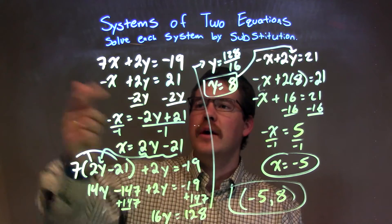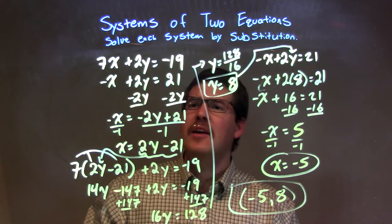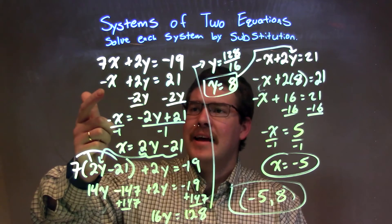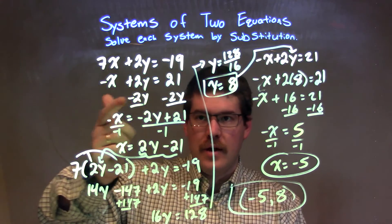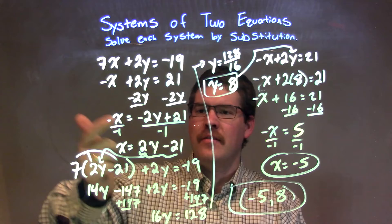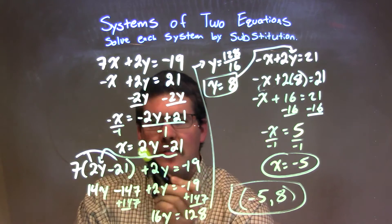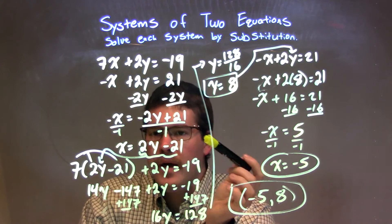So let's recap. We're given our two equations right there. And our second equation, I can get x by itself fairly quickly. Subtract the 2y to both sides, and then divide it by negative 1, which gave me x to be 2y minus 21.